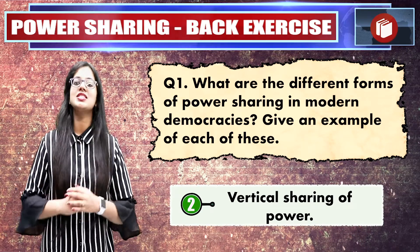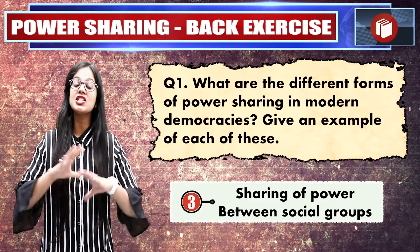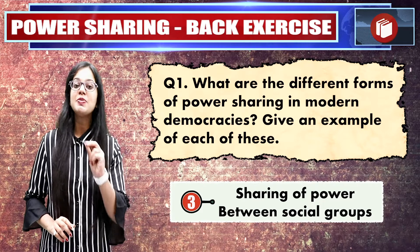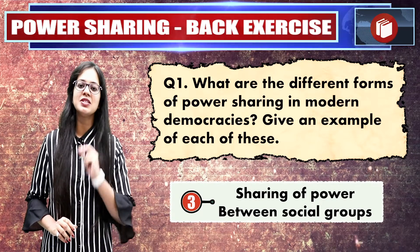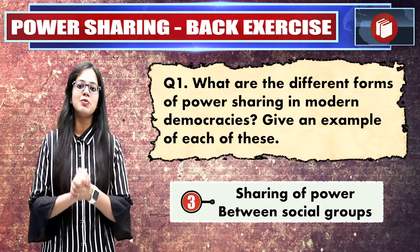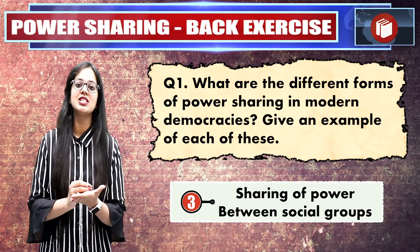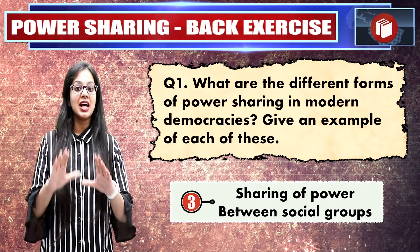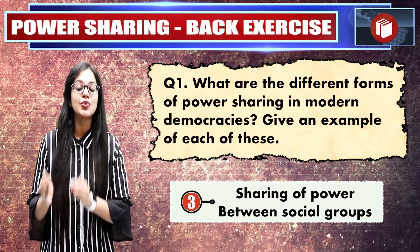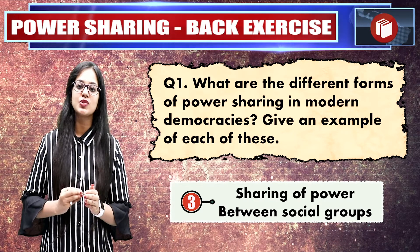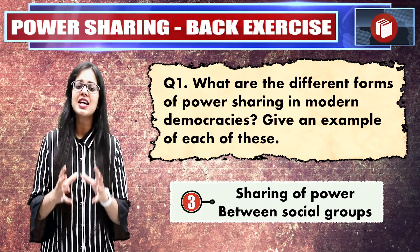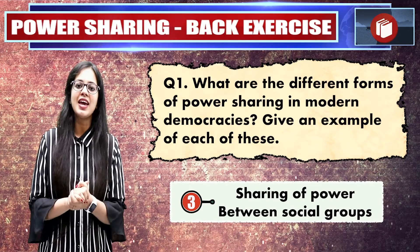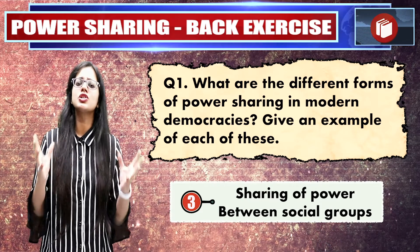The third form is sharing power among different social groups. For example, in Belgium, the Dutch-speaking community, French-speaking community, and Germans have established a community government to solve language-related, educational-related, and cultural-related problems. Another example is reserved constituencies in India, where seats are especially reserved for scheduled castes and tribes, so that everyone is equally treated and every social group is equal.